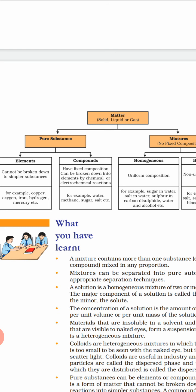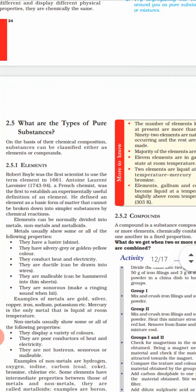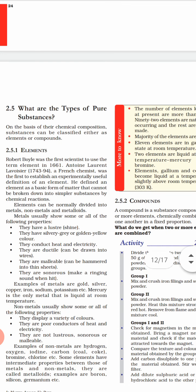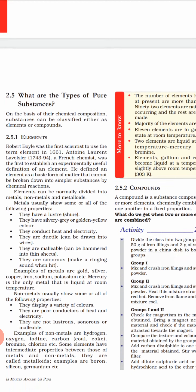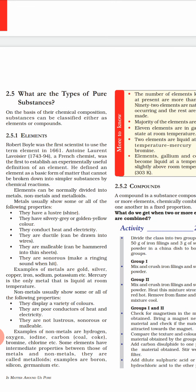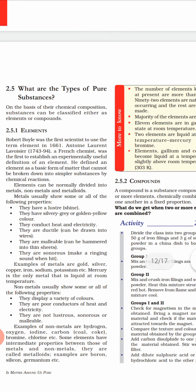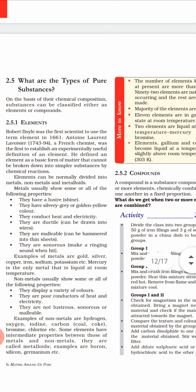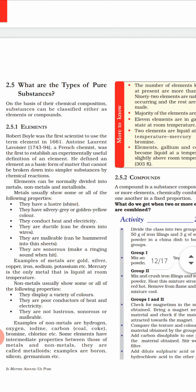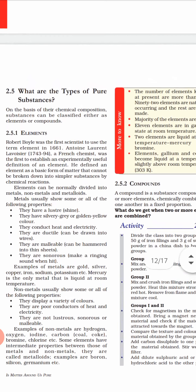Pure substance generally means there will be one type of particle. If I say water — only water — that is a pure substance because we have only water molecules and no other particles. But if I say salt solution, two things are present: salt and water. So that is a mixture. One very important property of mixtures is that the substances in a mixture show their own properties even within the mixture.